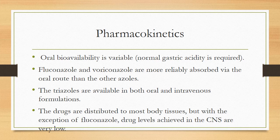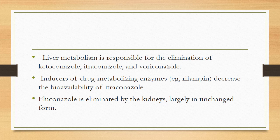Azoles are distributed to most body tissues, but with the exception of fluconazole, drug levels in the CNS are very low. Fluconazole achieves high CNS levels, which is why it is prescribed in fungal meningitis. Liver metabolism is responsible for elimination of ketoconazole, itraconazole, and voriconazole. Fluconazole is largely eliminated by the kidneys unchanged, so dosage adjustment is necessary in renal insufficiency.